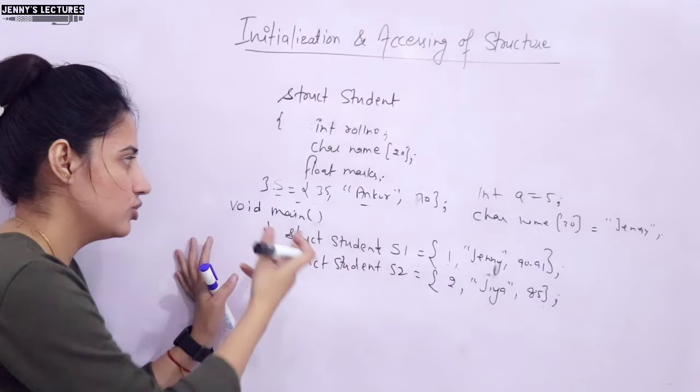Running the program: info for s1 shows '1 Jenny 90', info for s2 shows '2 Jia 85'. Now if I remove the initialization for s2 and write 's2 = s1', both s1 and s2 show the same output: '1 Jenny 90 1 Jenny 90' — confirming that the copy operation works correctly.